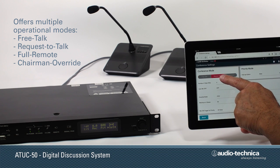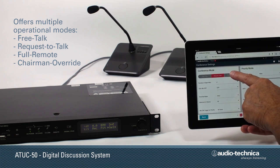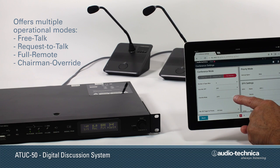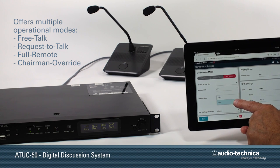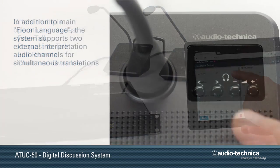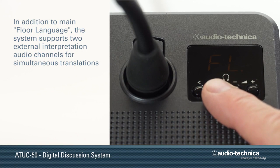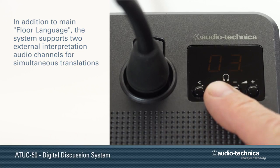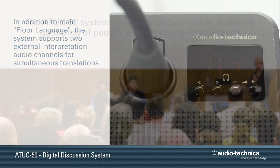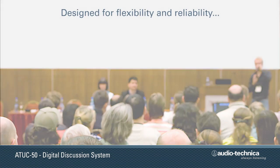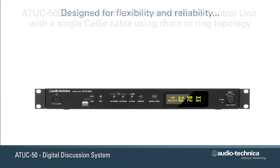Offering multiple operational modes, including free talk, request-to-talk, and full remote, along with various chairman overrides, the system is designed to keep the discussion moving along in an orderly fashion. In addition to the main floor language, the ATUC50 supports two external interpretation channels for simultaneous translations, allowing the system to easily accommodate a diverse gathering of people.